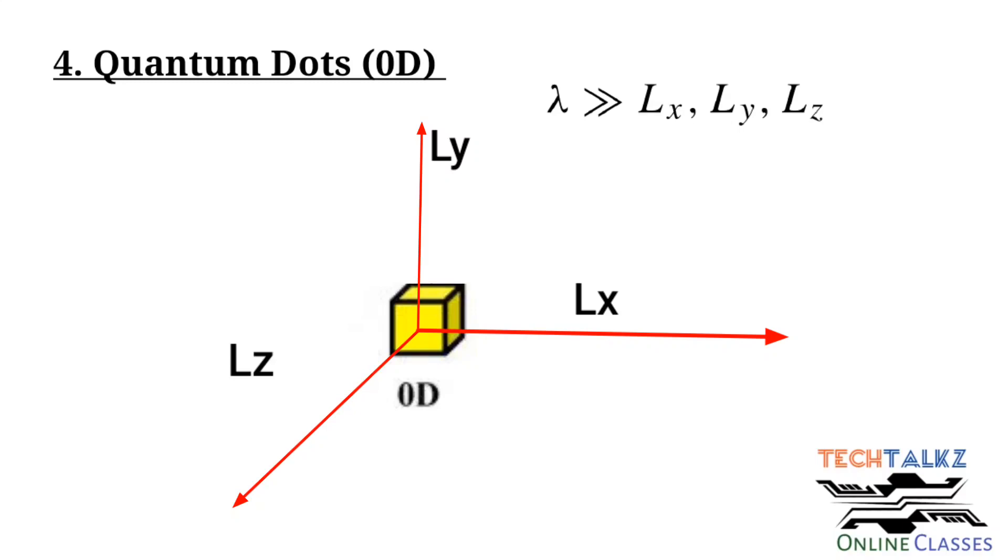Check the figure, here the electron movement is confined or restricted along all the axis. This is 0 dimension semiconductor or 0D semiconductor. It is also known as quantum dot.